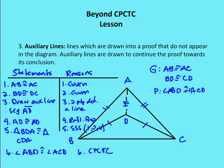The last topic is auxiliary lines — lines drawn in a proof that do not appear initially in the diagram. For example, there's no line from A to D in the original diagram. We have two triangles, BDC and BAC, where BDC is within BAC.